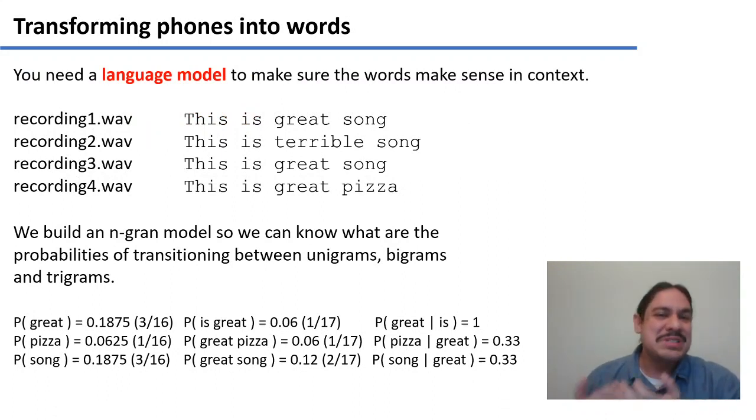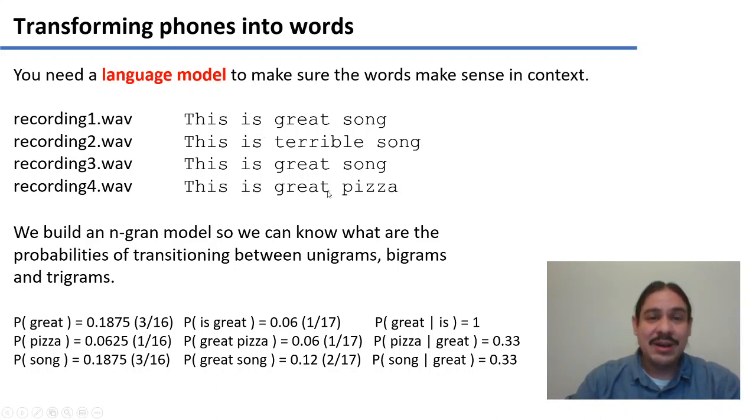How do you train a language model? The same way we did before. You have the transcription of your recordings. This is a great song. This is a terrible song. And then you calculate probabilities for individual unigrams, for bigrams, for trigrams, and so forth.